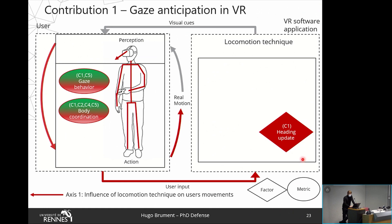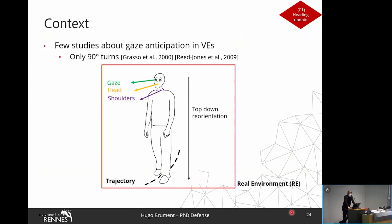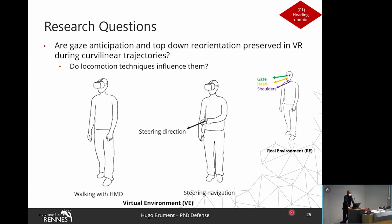In the first contribution, we investigated the influence of the heading update on gaze behavior, using metrics of gaze behavior and body coordination. Our motivation was to understand how humans control their movement in VR — specifically how gaze anticipation works in VR. Previous work assessed gaze anticipation only for 90-degree turns using walking, so we had no information regarding gaze anticipation for curvilinear trajectories or about how other locomotion techniques could alter gaze behavior. Our research questions were: is gaze anticipation and top-down reorientation preserved in VR during curvilinear trajectories, and do locomotion techniques influence those properties?